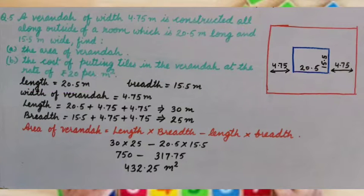Length of the room is given as 20.5 meter and breadth 15.5 meter. A veranda 4.75 meter wide is constructed outside it.